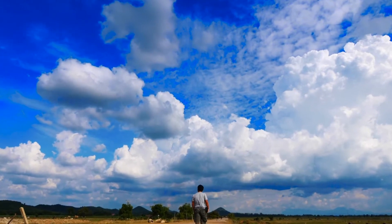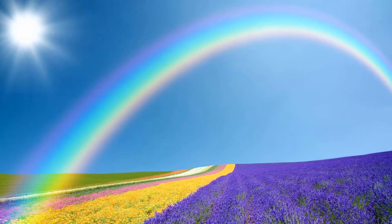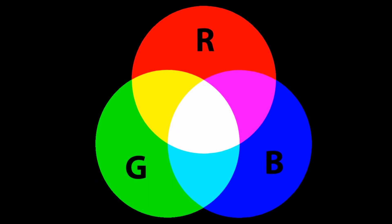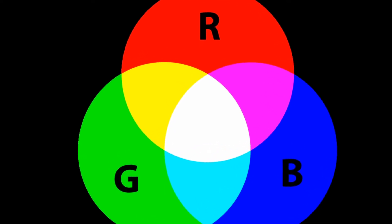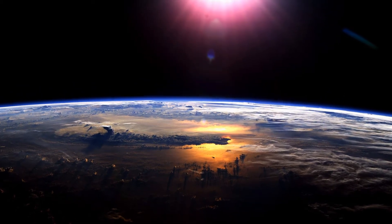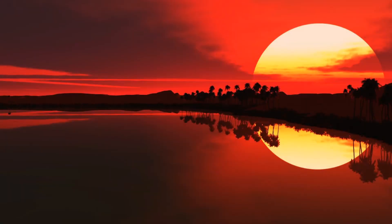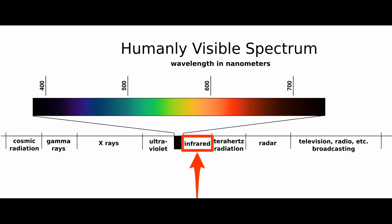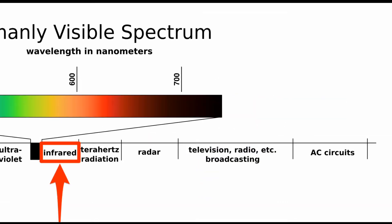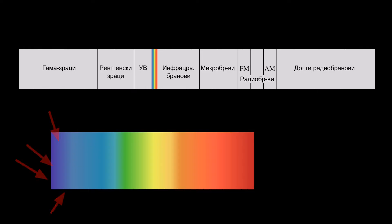During the day, the sky has a blue appearance because the Sun's light is made up of rainbow colors of different wavelengths. This means all these different colors of light combine to give what is called white light. When sunlight enters the Earth's atmosphere, it collides with air particles, causing the scattering of sunlight around the sky. Light with a shorter wavelength is scattered more by this collision than light with a longer wavelength.